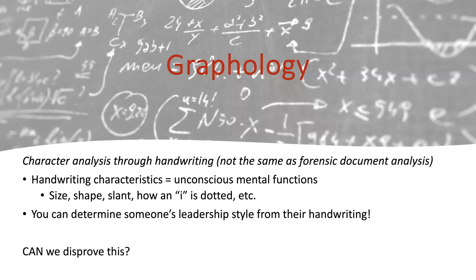First, I want to talk about graphology — we mentioned this briefly in lecture. It's this idea that you can assess people's unconscious mental functions, personality, if they are inclined to be a murderer, if they're a good leader, through the size, shape, slant, and other features of their writing. So if you dot an 'i' a certain way, if your handwriting is slanted a certain direction, you can determine that. So if I make the claim that you can determine someone's leadership style from their handwriting, how would you go about disproving it? What observation could disprove this? What observation could say this is false? You can pause the video if you want to come up with a list.